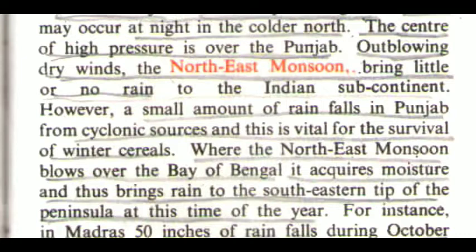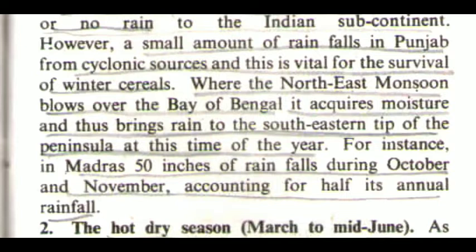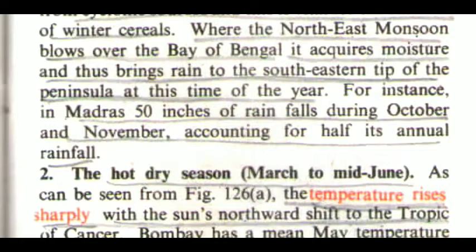Where the northeast monsoon blows over the Bay of Bengal, it acquires moisture and thus brings rain to the southeastern tip of the peninsula at this time of the year. For instance, in Madras, 50 inches of rain falls during October and November, accounting for half its annual rainfall.